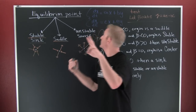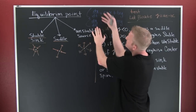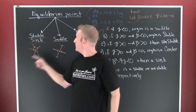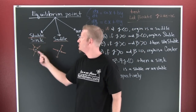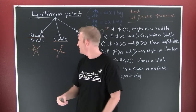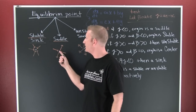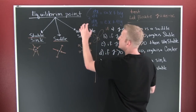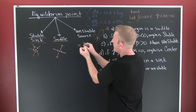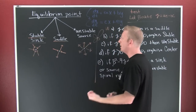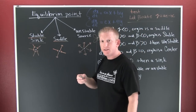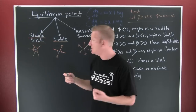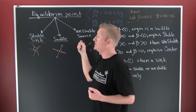For a two by two system, we have dX/dt and dY/dt. Three things can happen at the origin: it can be stable, or a sink, where everything sucks into it; or a saddle, where things get sucked in and spit out; or unstable, called a source, where everything comes from it. Now there's a test to see what the origin is on these two by twos — whether it's stable, saddle, or unstable.